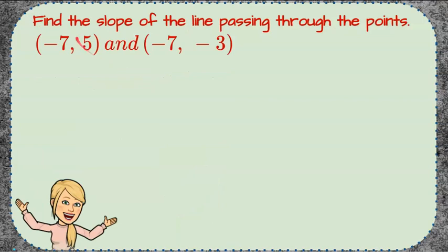Here's your challenge. Find the slope of the line passing through the points (-7, 5) and (-7, -3).